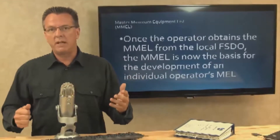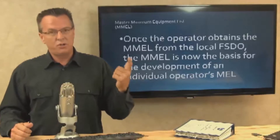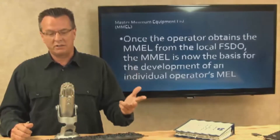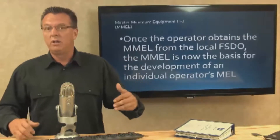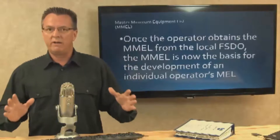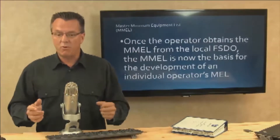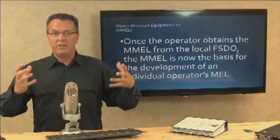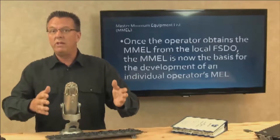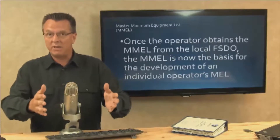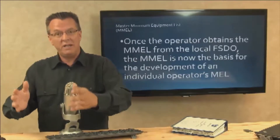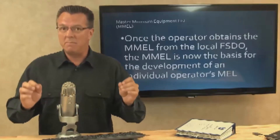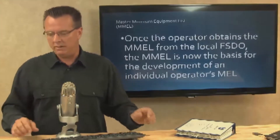Those are more complicated aircraft — they have two engines, two electrical systems, two hydraulic systems, multiple radios, along with a lot of other equipment. So the company I worked for, Omni Flight Helicopters, developed their MEL for the BK 117 and also for the EC 135 from the master minimum equipment list.